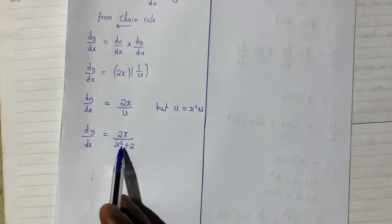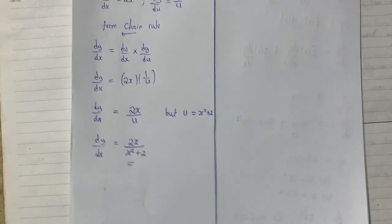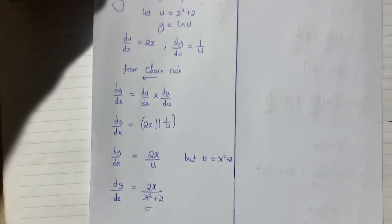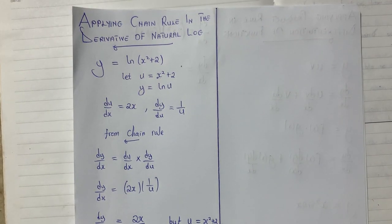This place you can write but u equal to x squared plus 2, so that you know you are substituting it back here. And this becomes our final answer. This is how we apply chain rule when we have natural log questions such as this.